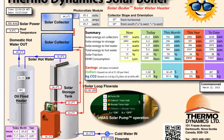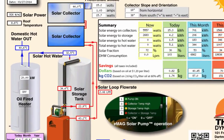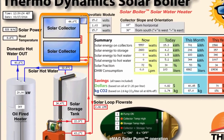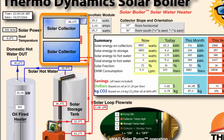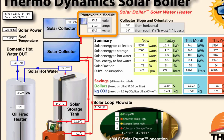Taking a closer look at the system operation, here are the solar collectors, which generate the energy to heat your water, shown here with the collector temperature. And here is the PV module, which generates the electricity to power the system, shown here with volts, amps, and watts generated.